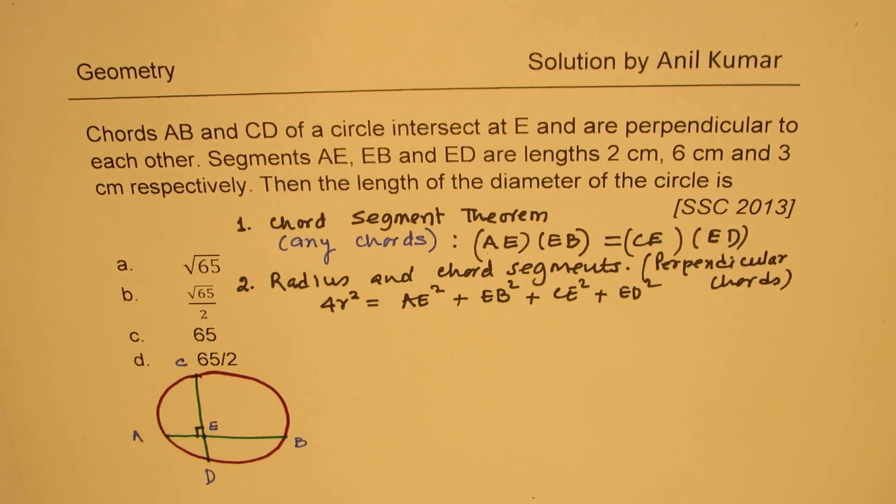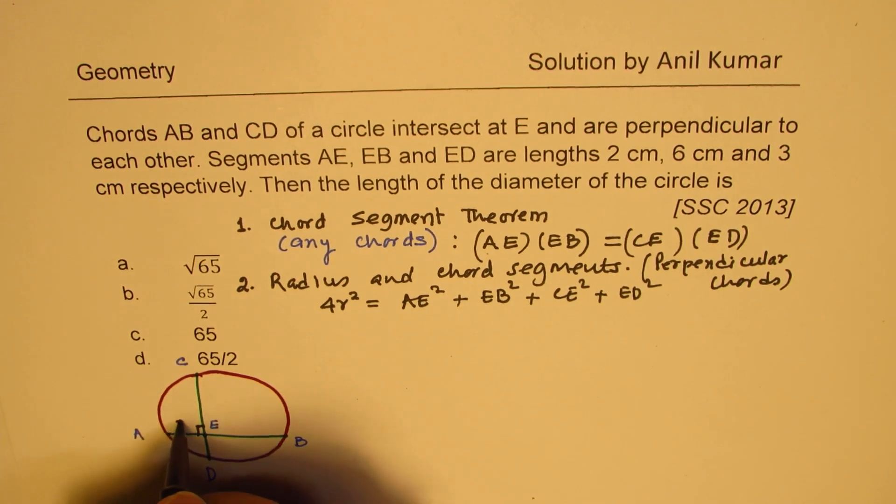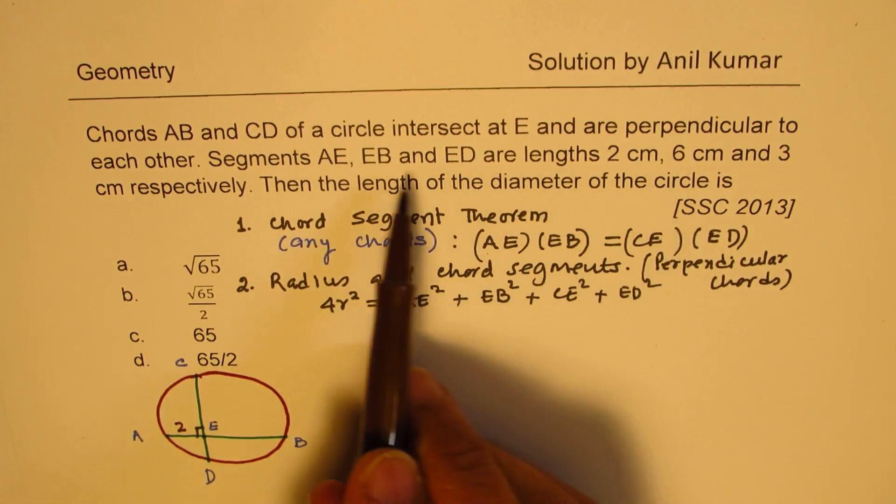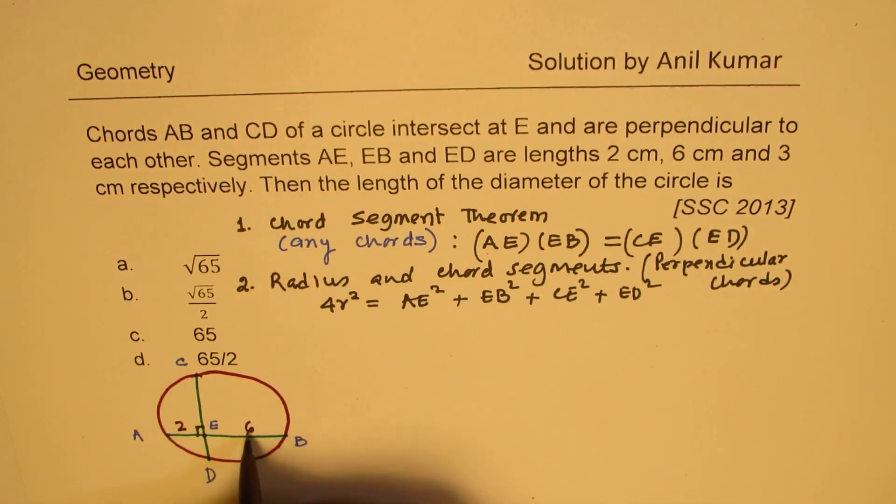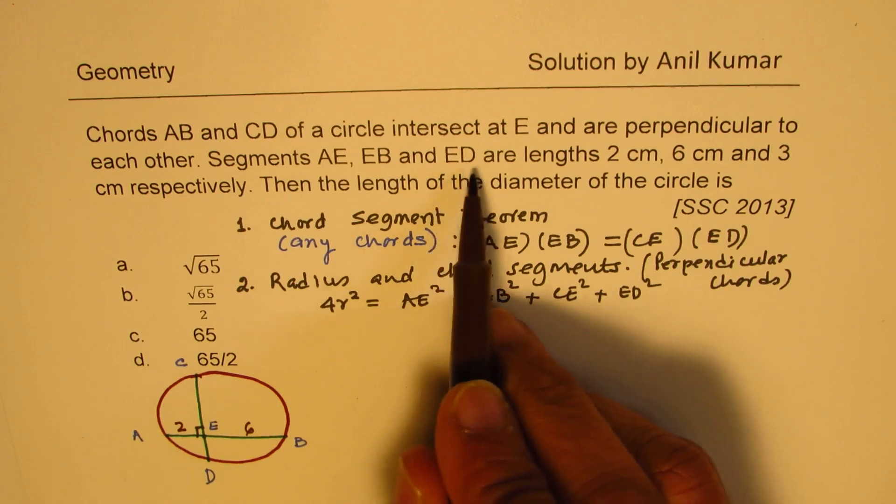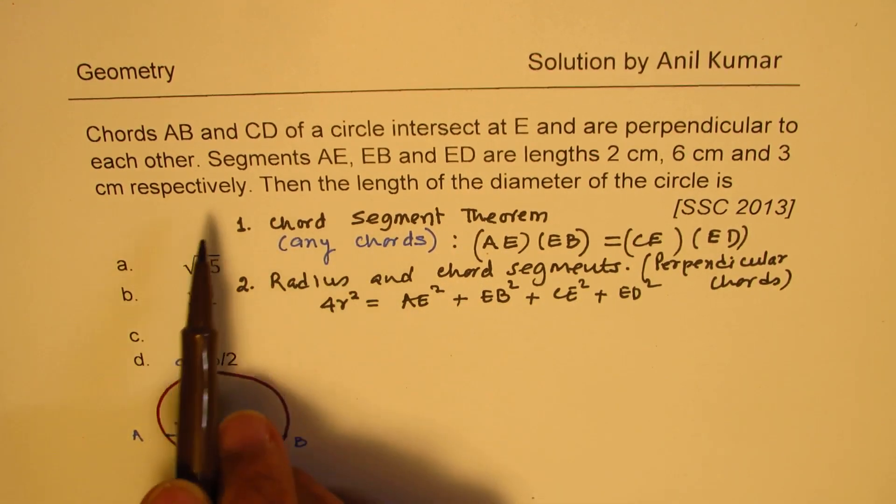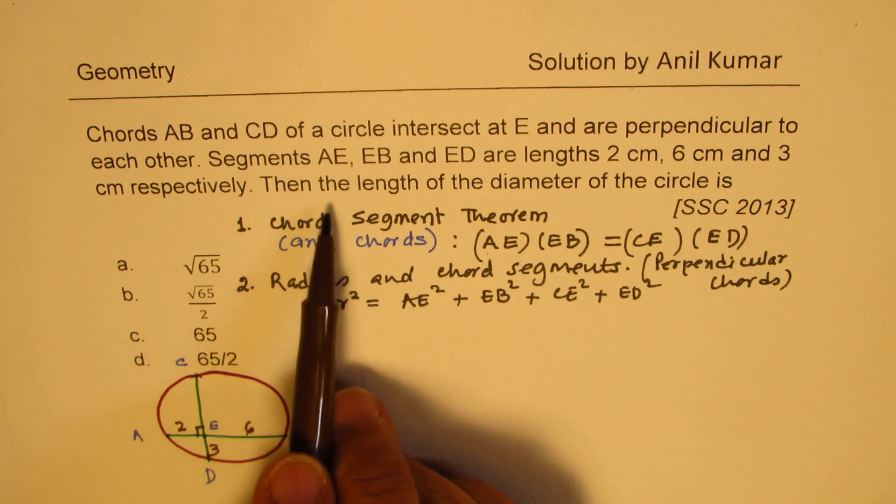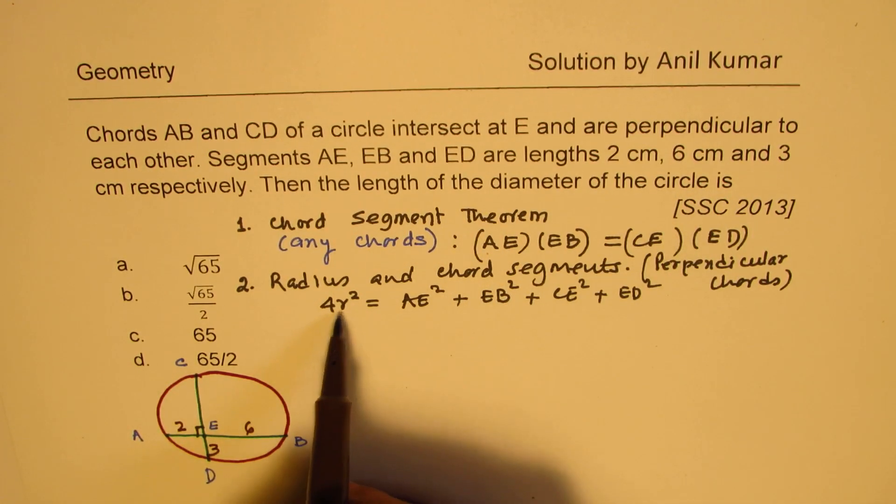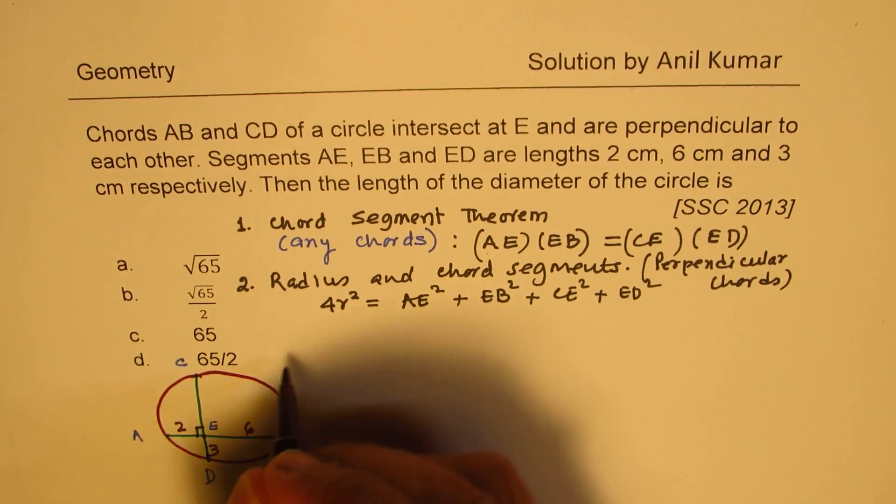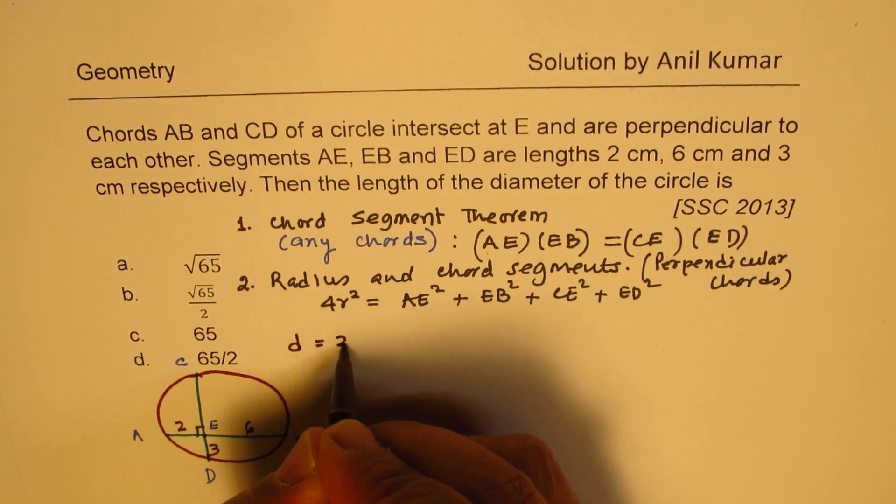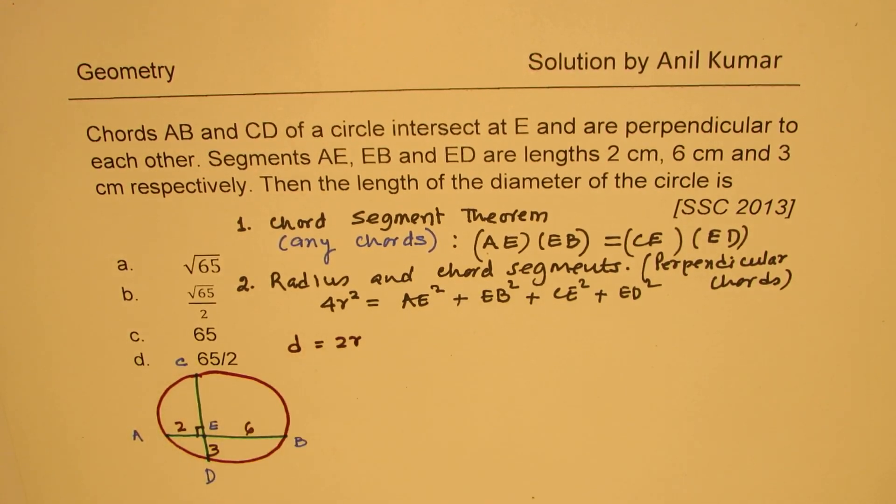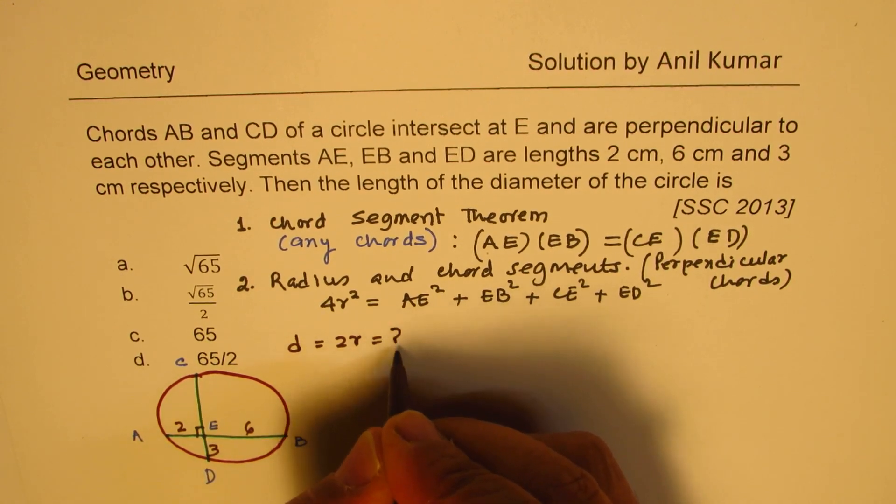Segments AE, EB and ED are two centimeters, six centimeters and three centimeters. So AE is two centimeters. This is two centimeters. I'm not writing centimeters here. Six centimeters is E to B and E to D is three centimeters. Then the length of the diameter is what? So two times the radius we have to find. So the diameter will be equal to two times the radius. This is what we have to find.